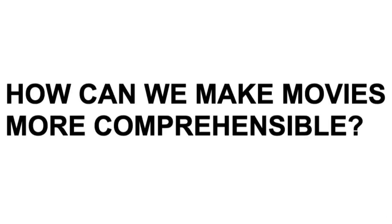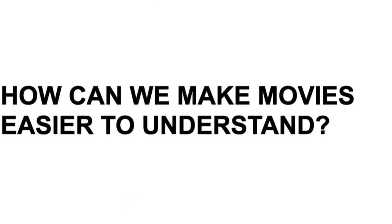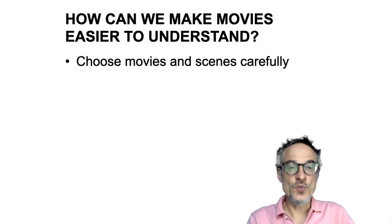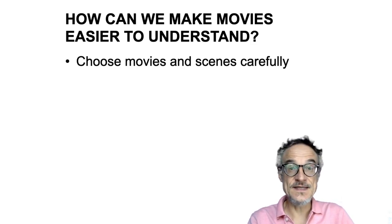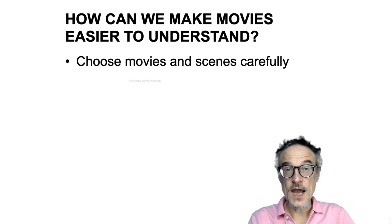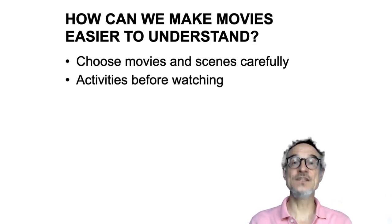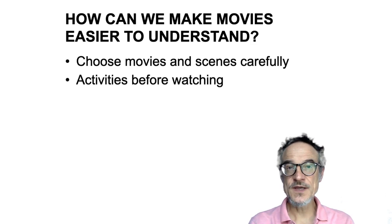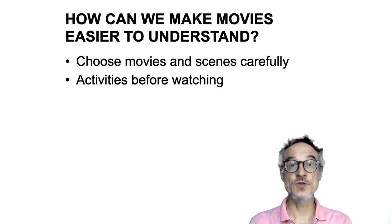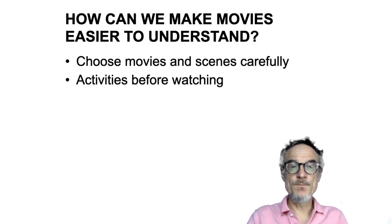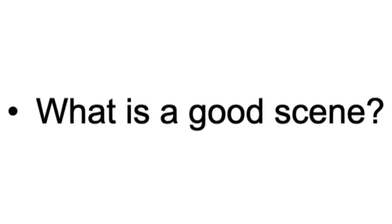Comprehensibility is the problem — movies are sometimes not very easy to understand. So the question is: how can we make movies more comprehensible? We can do this first by choosing movies and scenes carefully, and also by doing activities before we watch which will help us while we're watching. What is a good movie, and what's a good scene?